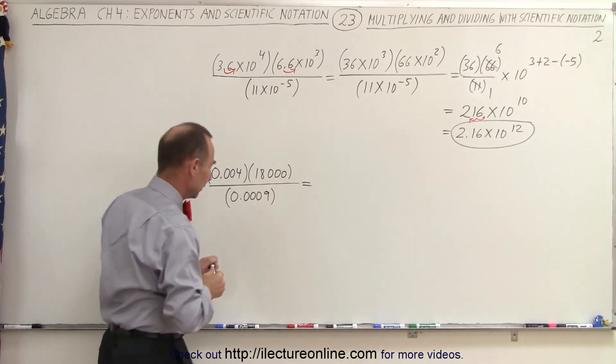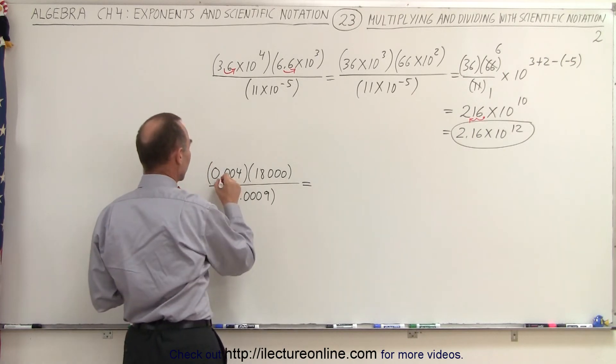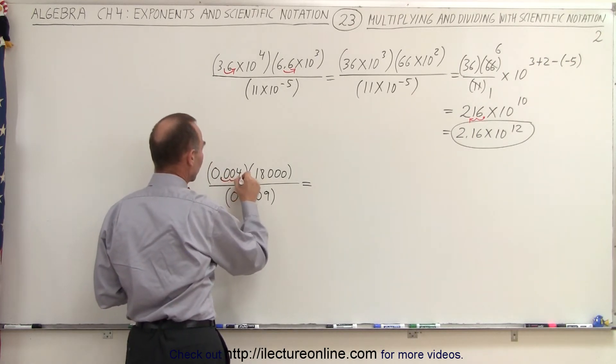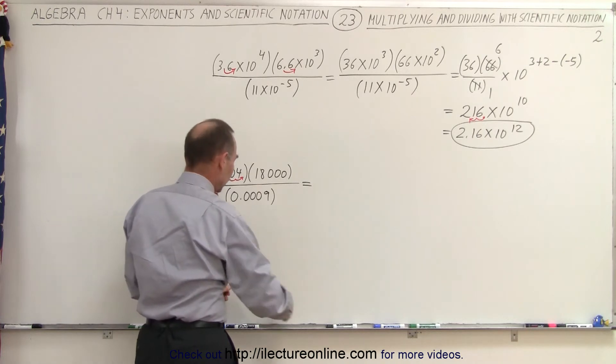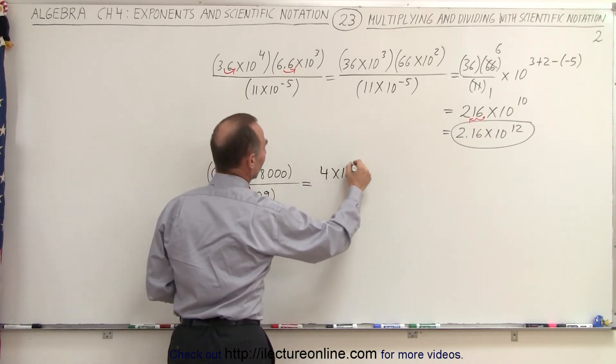The first one here, we're going to have to move the decimal point over 1, 2, 3 places. And so this becomes equal to 4 times 10 to the minus 3.